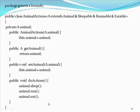The declaration of the parameterized class looks like the following: Public class AnimalAction extends Animal And Sleepable And Runnable And Eatable